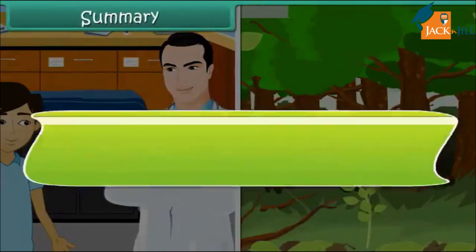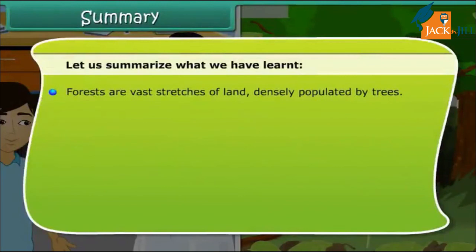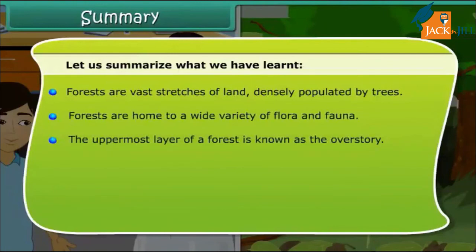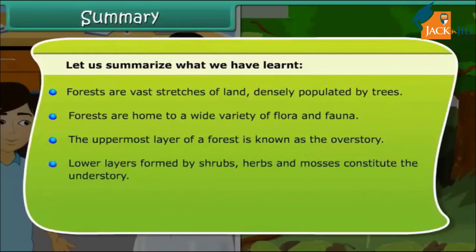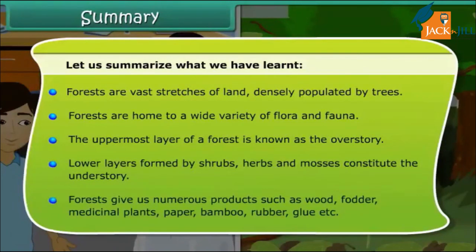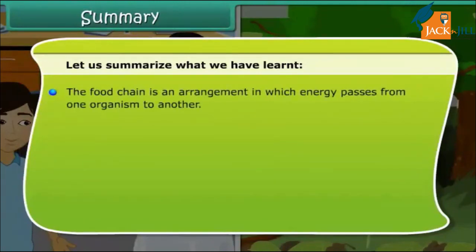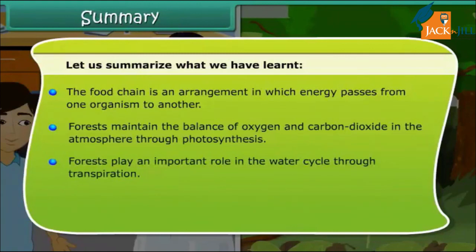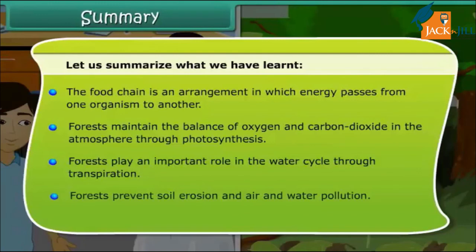Summary: Forests are vast stretches of land densely populated by trees. They are home to a wide variety of flora and fauna. The uppermost layer of a forest is known as the overstory; lower layers formed by shrubs, herbs and mosses constitute the understory. Forests give us numerous products such as wood, fodder, medicinal plants, paper, bamboo, rubber, glue, etc. The food chain is an arrangement in which energy passes from one organism to another. Forests maintain the balance of oxygen and carbon dioxide in the atmosphere through photosynthesis, play an important role in the water cycle through transpiration, and prevent soil erosion and air and water pollution.